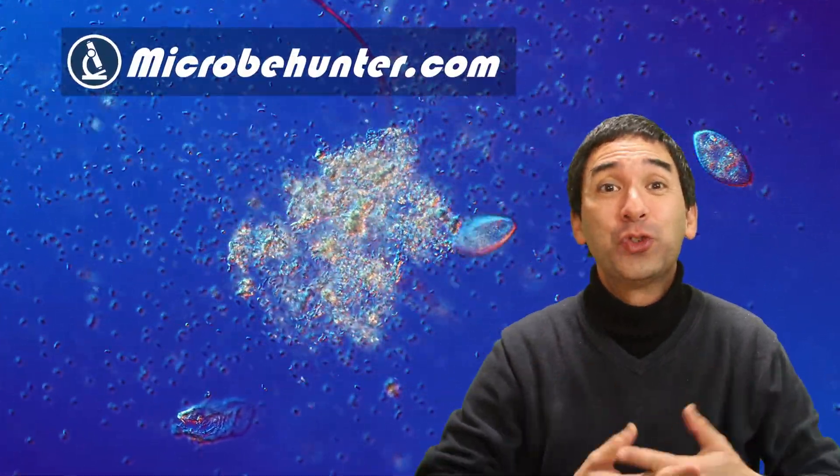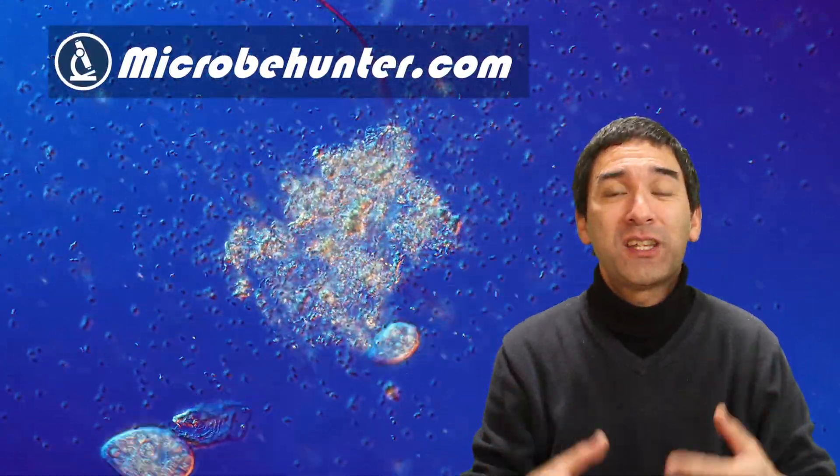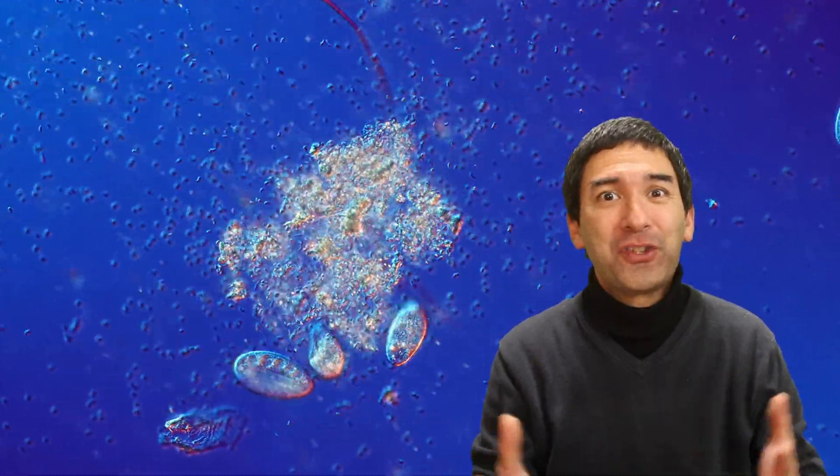Specifically, I would like to show you how ciliates, such as paramecium and vorticella, among others, how they are able to hunt for bacteria.